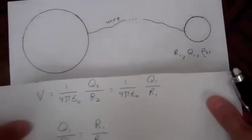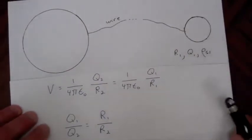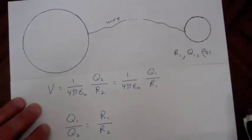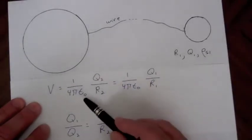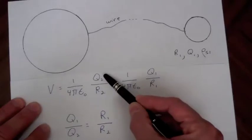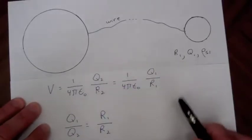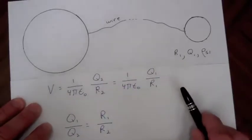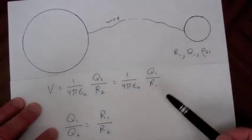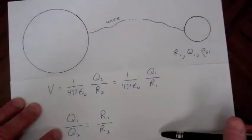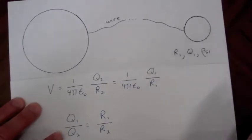The potential for a sphere with charge on it is equal to (1 / 4πε₀) times the charge on the sphere divided by the radius of the sphere. Since the two spheres are at the same potential, these expressions are equal. Solving for Q₁ over Q₂, we see it's equal to R₁ over R₂.